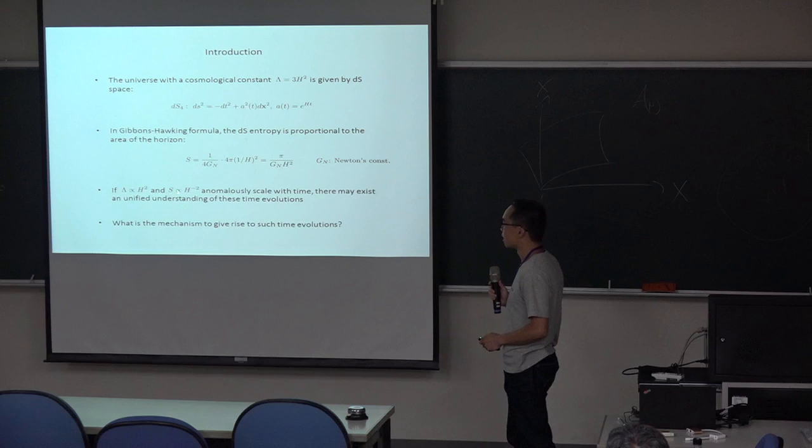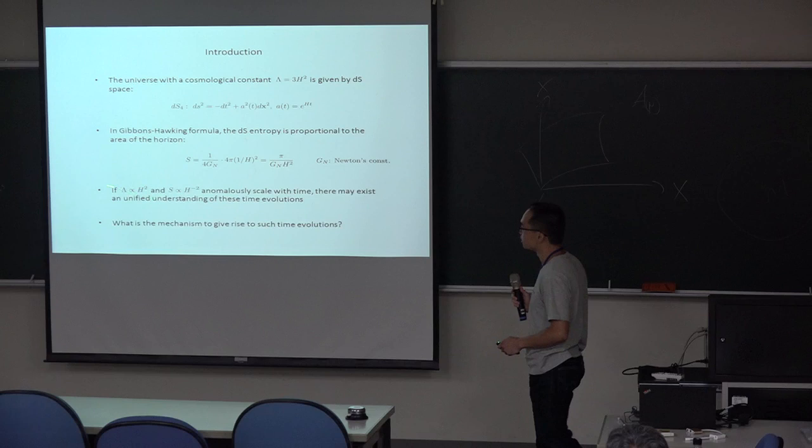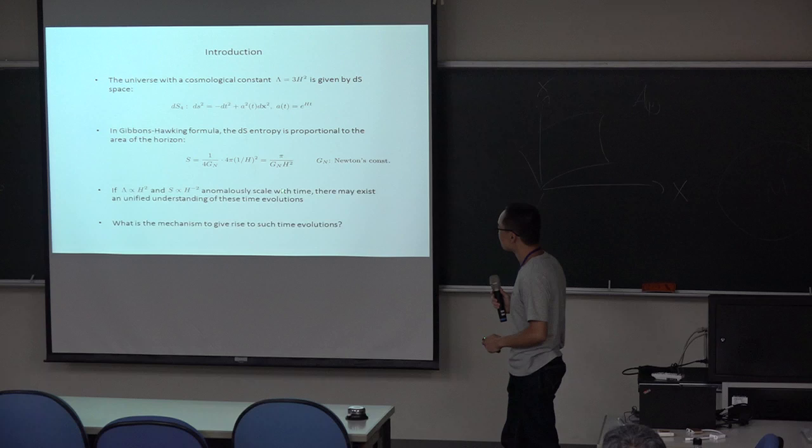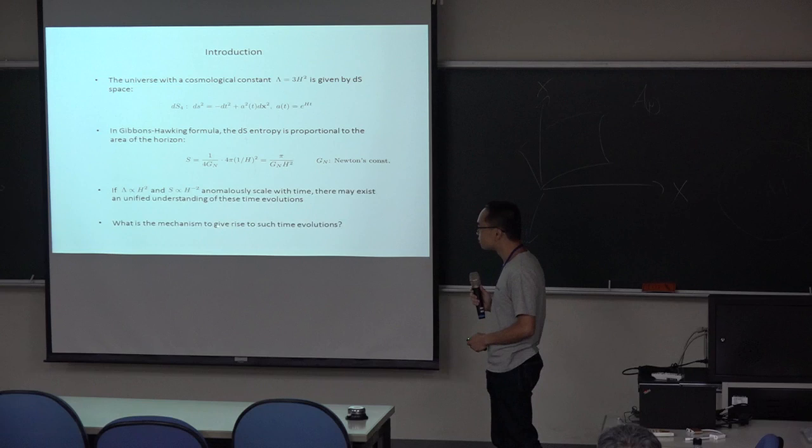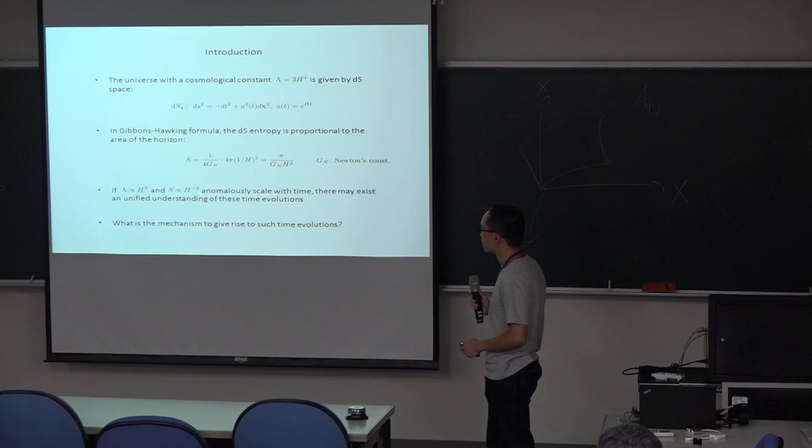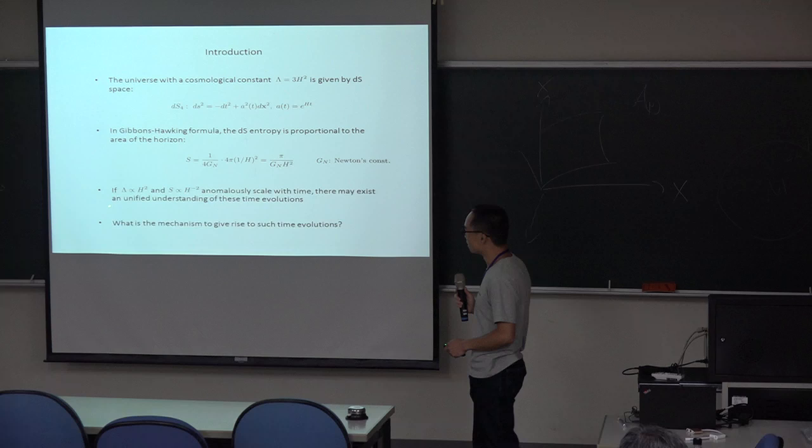The important point is the cosmological constant is proportional to the square of the Hubble parameter, and the entropy is anti-proportional. There may exist a unified understanding. For example, we expect that the entropy increases in time. Such an entropy increase is related to the cosmological evolution.